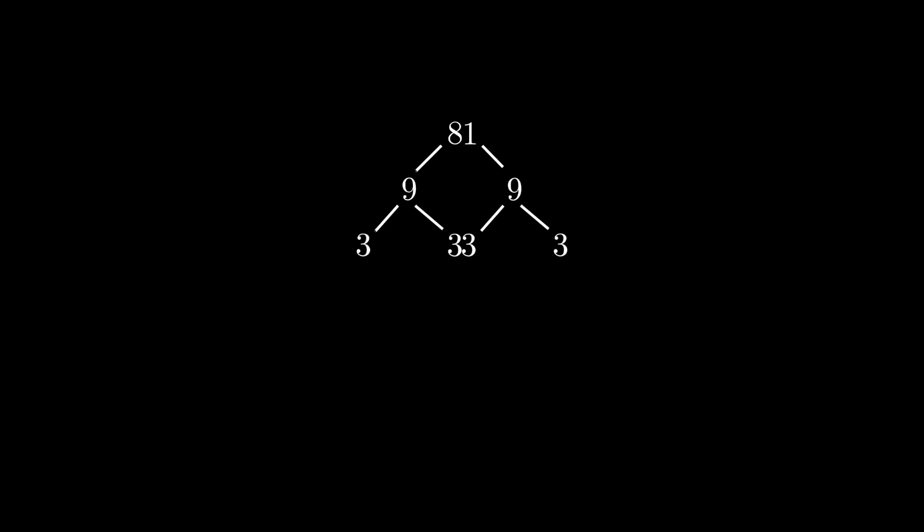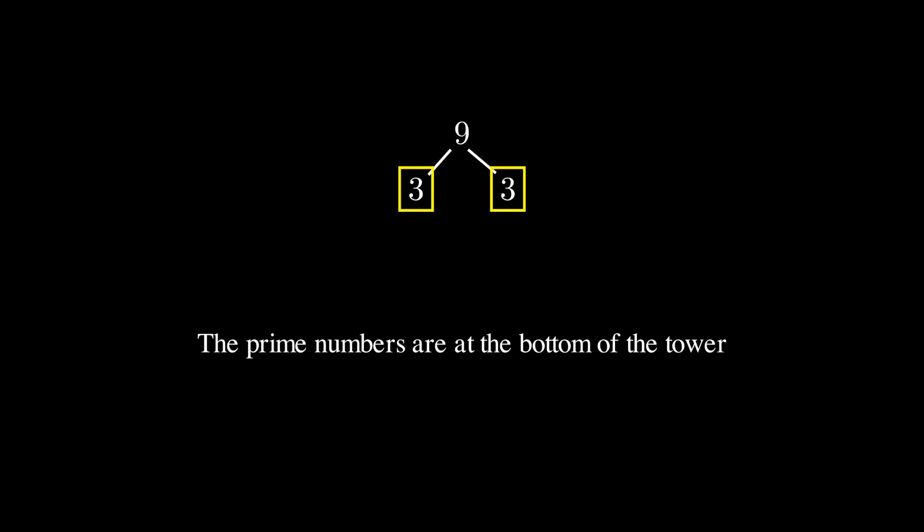To find the prime numbers, you might try factorising a number. For instance, start with the number 6 and see what divides into it. In this case, 2 and 3. This works for any number, and the foundations of this tower comprise the prime numbers. You can't divide them into anything.